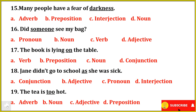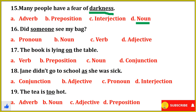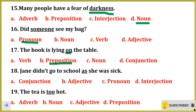Next set of questions. Many people have a fear of darkness — so 'darkness' will be noun. Did someone see my back? — 'someone' will be pronoun. The book is lying on the table — so 'on' will be preposition.